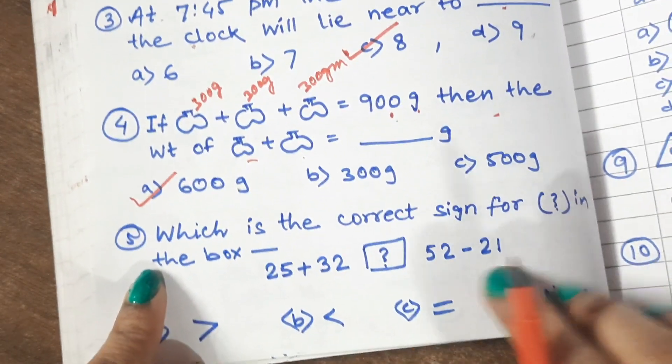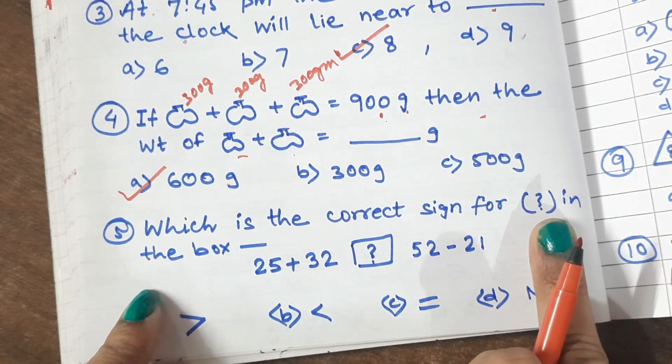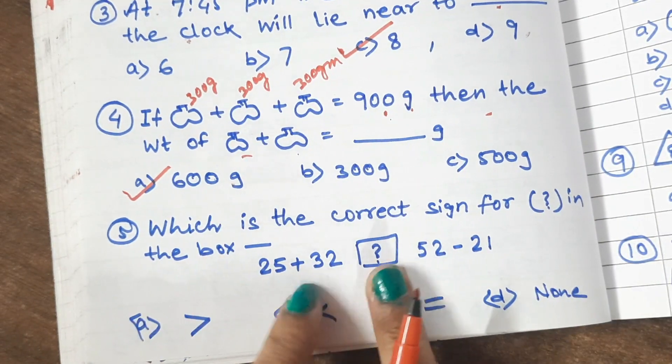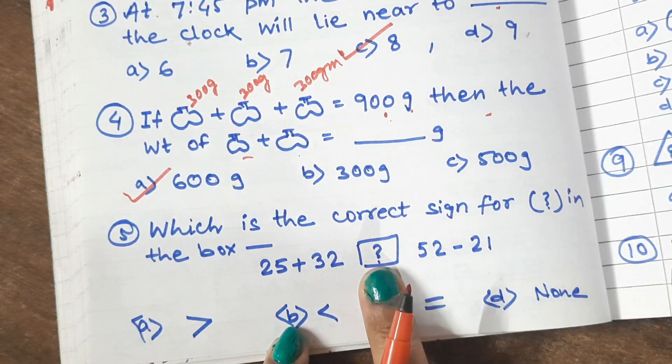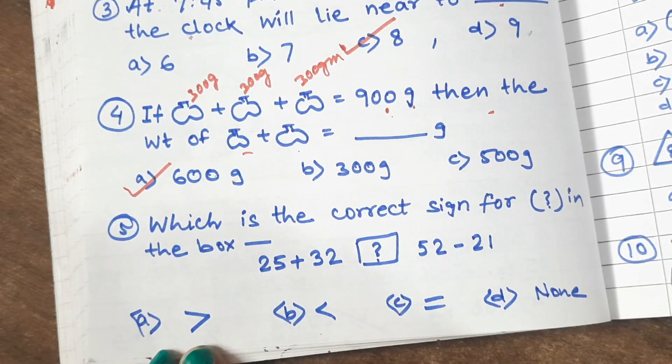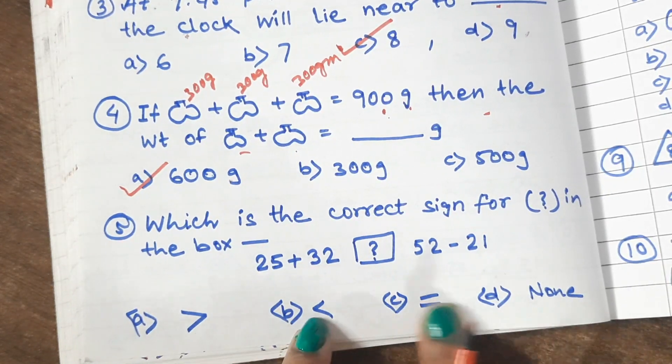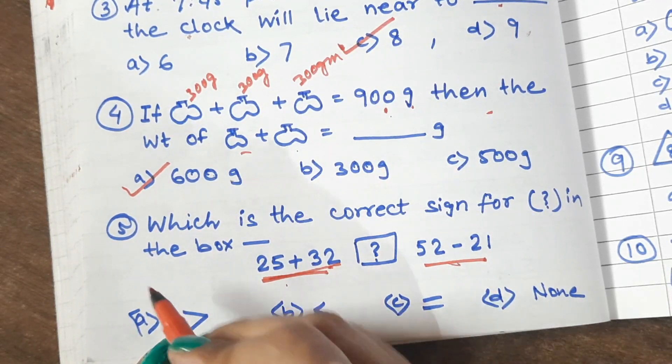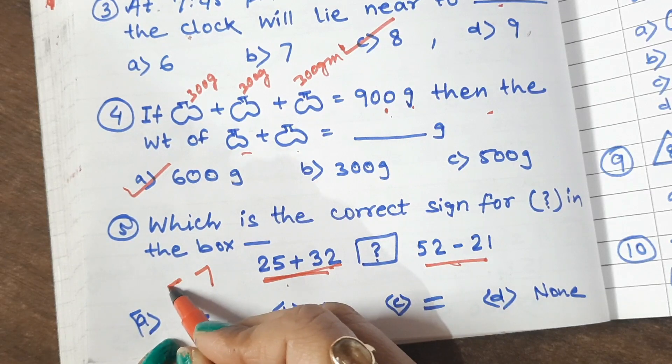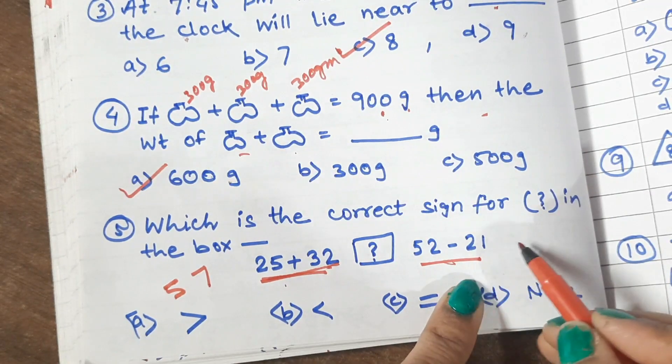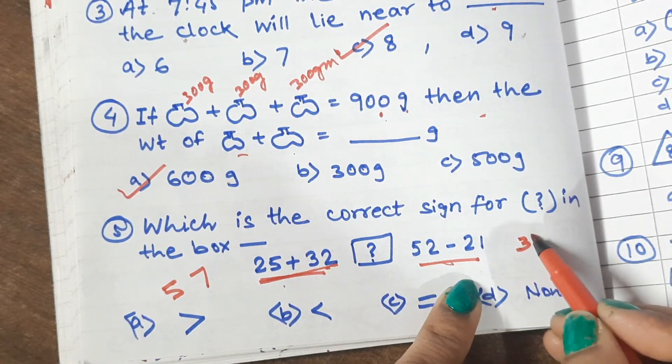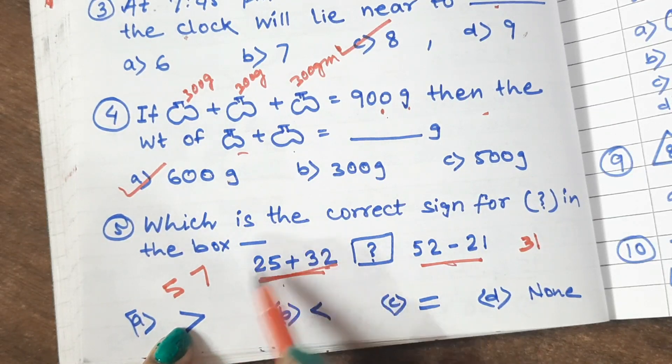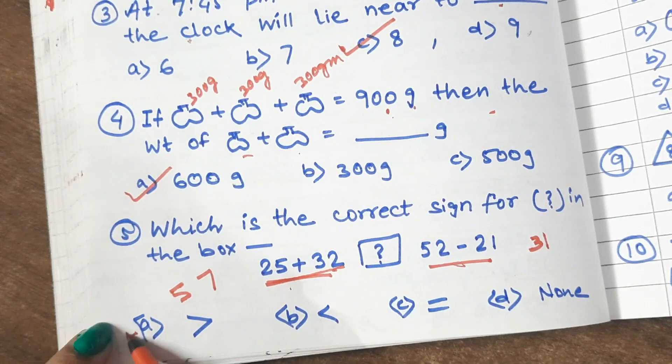Question 5: Which is the correct sign for the question in the box? Now in this box, the question mark is written. Which sign should be written here? Greater than, less than or equal to. So now, either plus sign or minus sign. So if you have to plus these digits, this will be 557. And if you have to minus sign, this will be 31. So this number is bigger. So sign will be greater than.